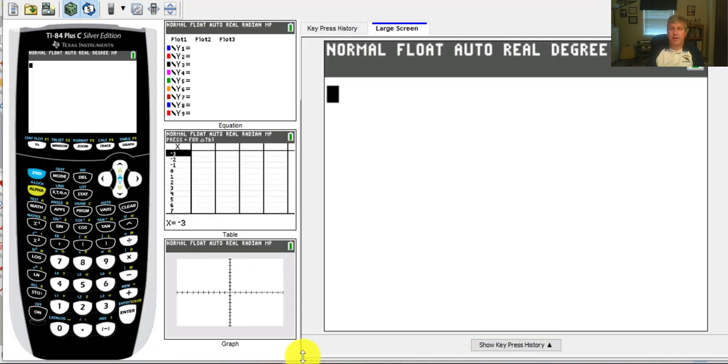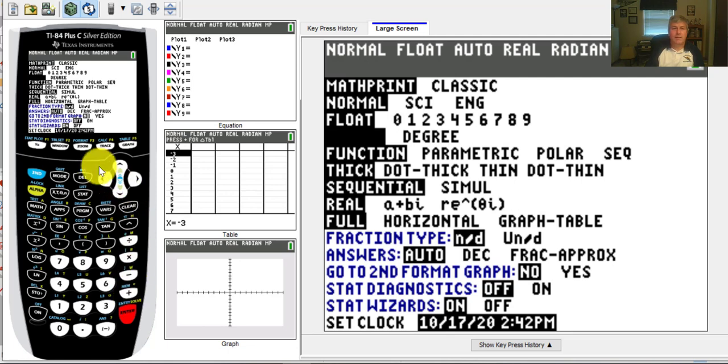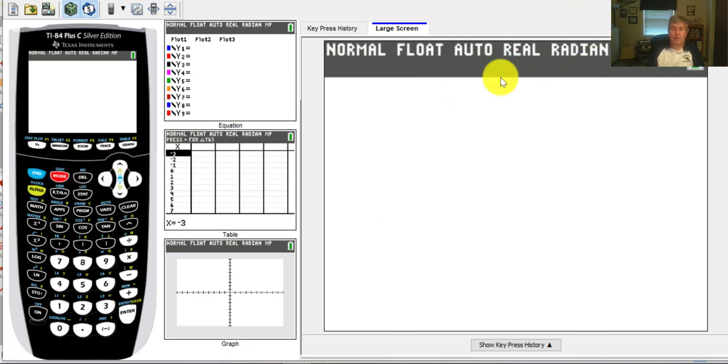So pulling up our calculator, I can see here that my calculator is in degree mode. So I have to go change the mode, cursor down to radians, select that, and then quit that. And now I can see I'm in radian mode. So now I'm going to get the correct values.